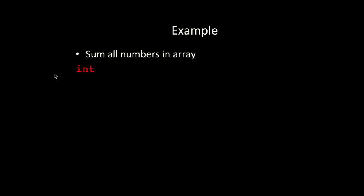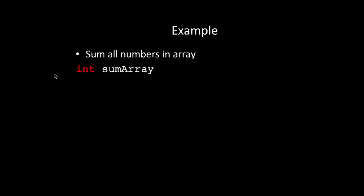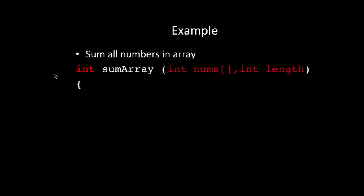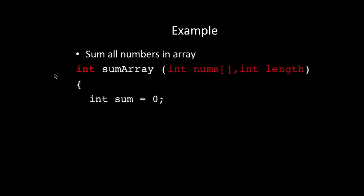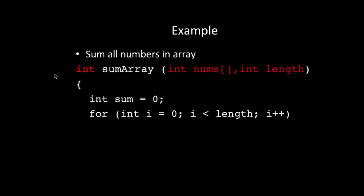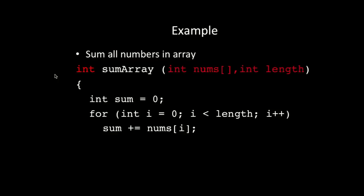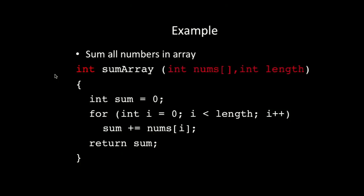Example: a function that sums all numbers in an integer array. The return type is int, the name is sum_array, and it takes parameters int nums[] and int length. Initialize a variable sum = 0, then loop with for (int i = 0; i < length; i++), adding each element: sum += nums[i]. Then return sum. This saves a lot of code if you use this function repeatedly.